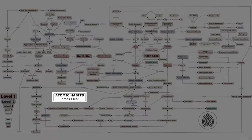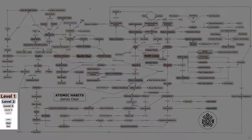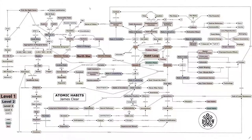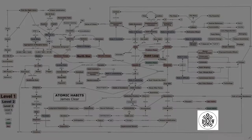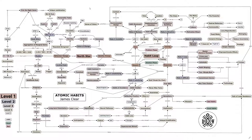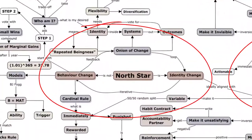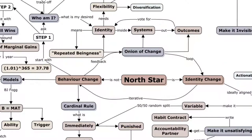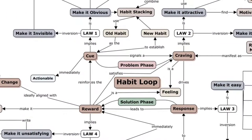Let's go through a few housekeeping items first. This is for Atomic Habits, written by James Clear. On the bottom left, we have the levels of each concept. A level 1 concept would be in brown and a level 5 concept would be in light blue. On the bottom right is the Do The Work logo. In this mind map, I found there were really two central nodes. One was the North Star on the left - identity change rather than behavior change. The other big part was the habit loop with its four steps: cue, craving, response, reward.